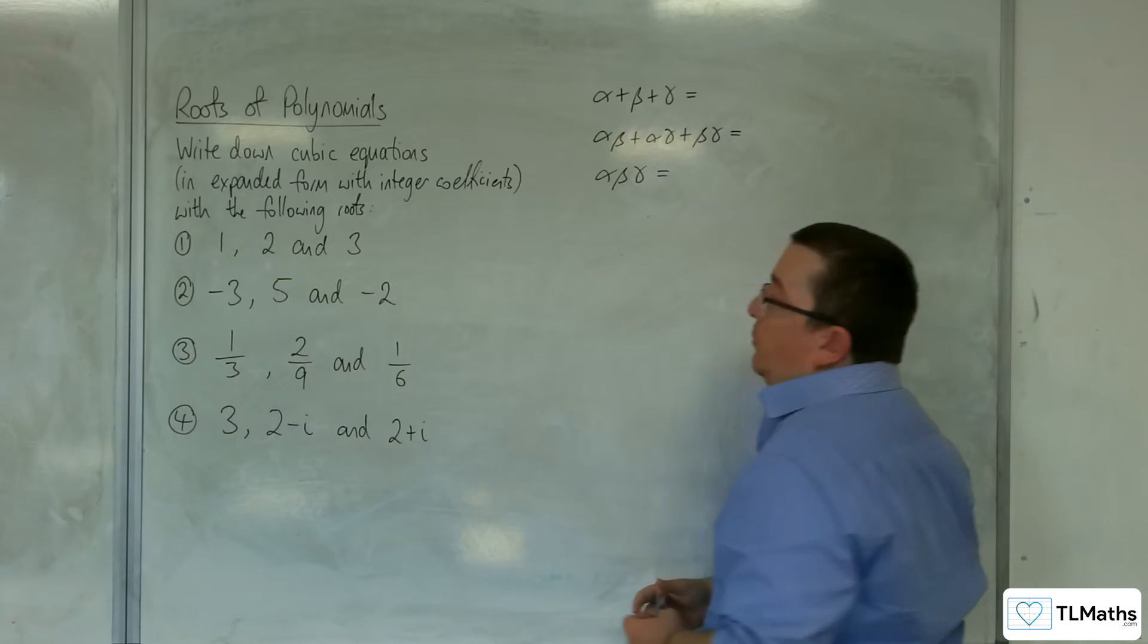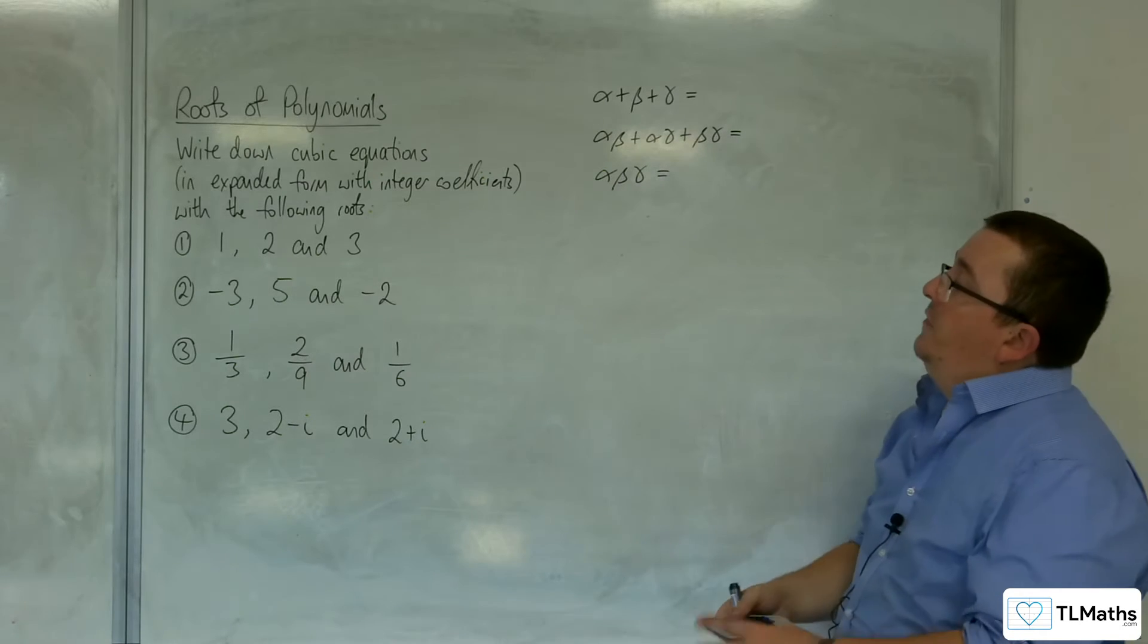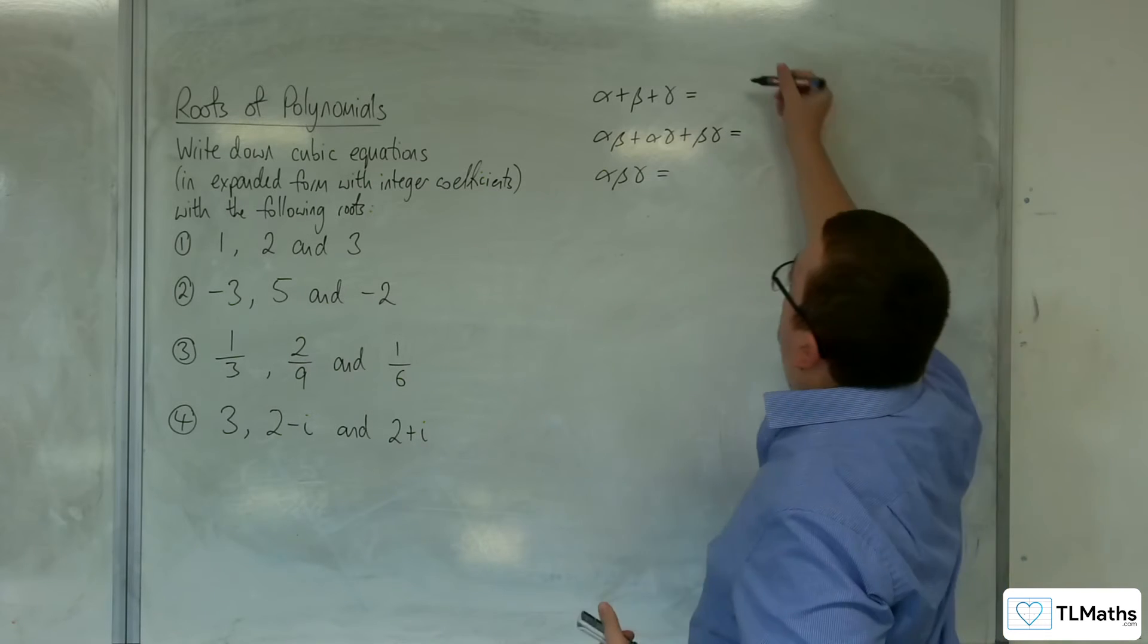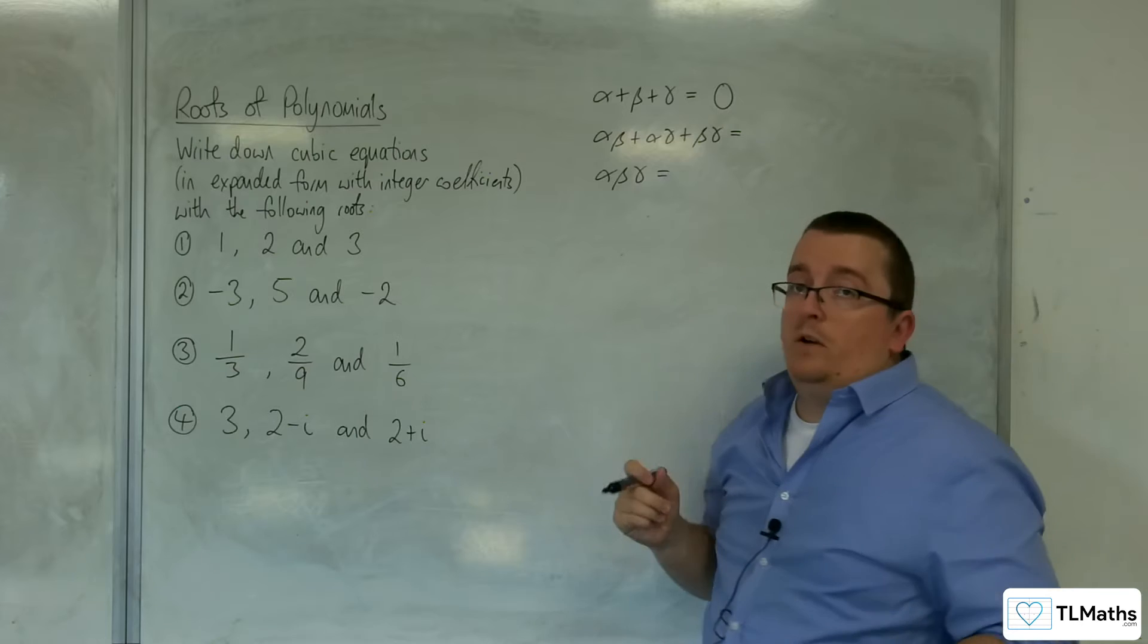Right, so the next one, we've got minus 3, 5, and minus 2. So minus 3 plus 5 take away 2 is 0. So alpha plus beta plus gamma will be 0.